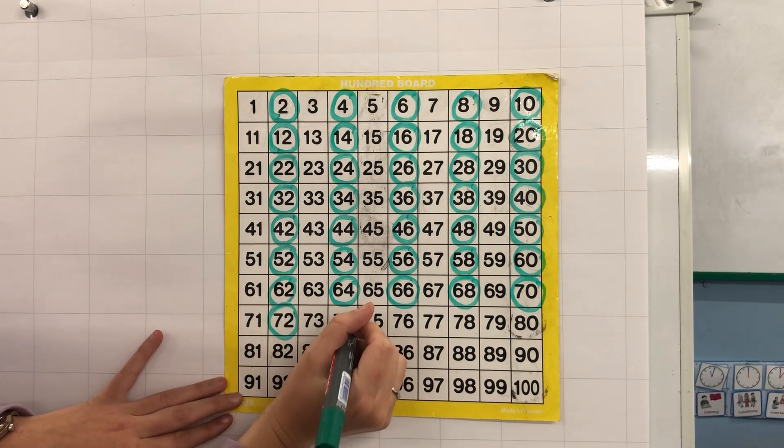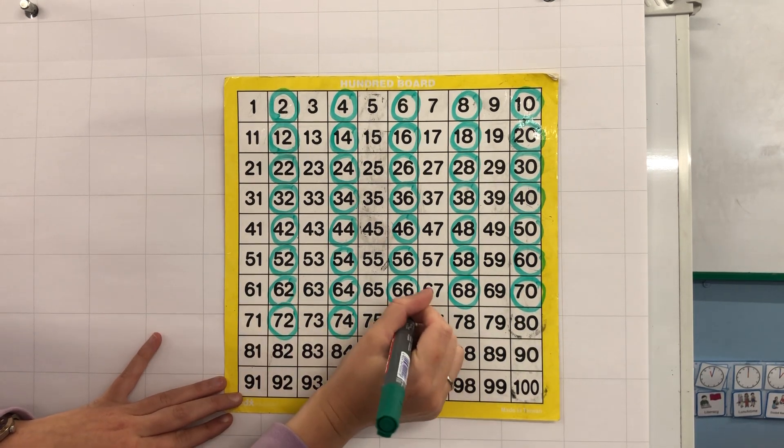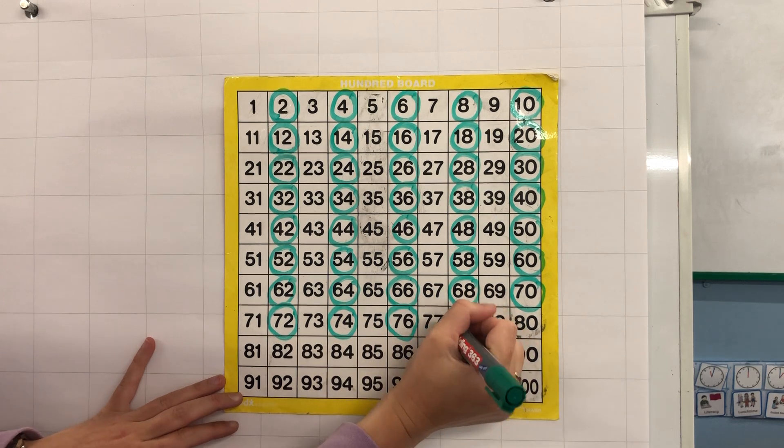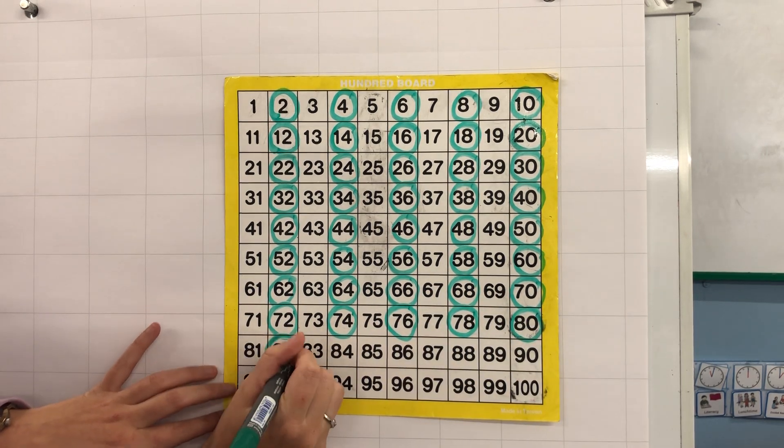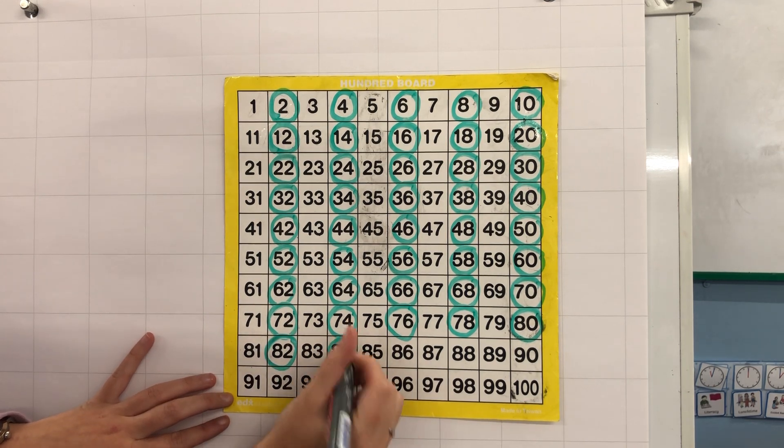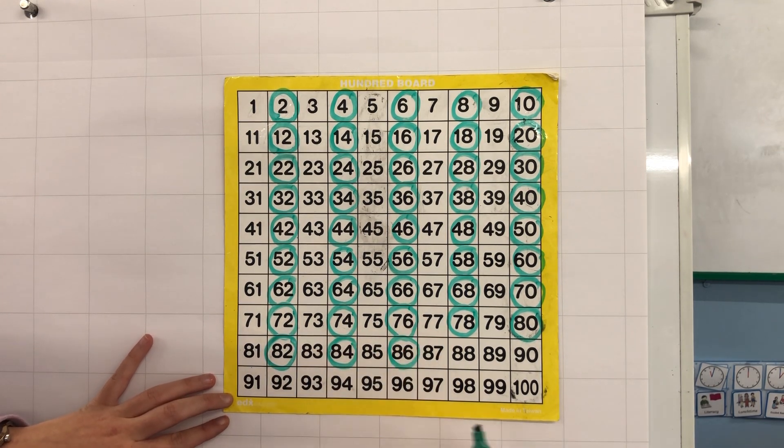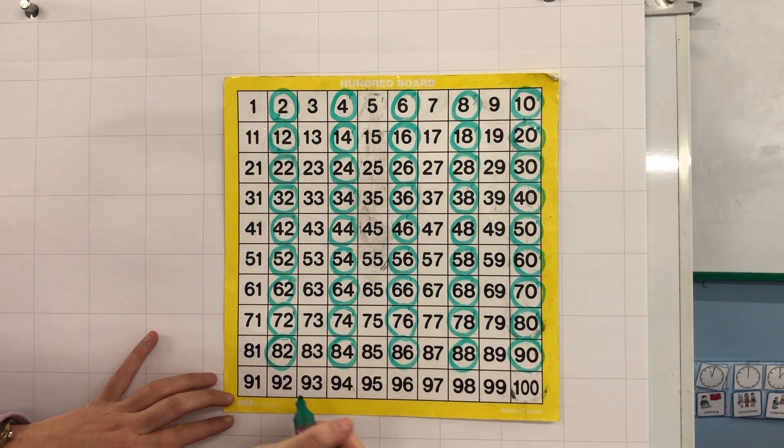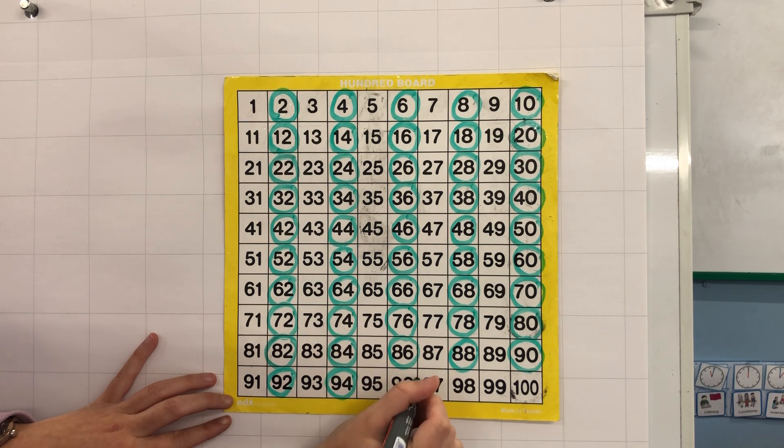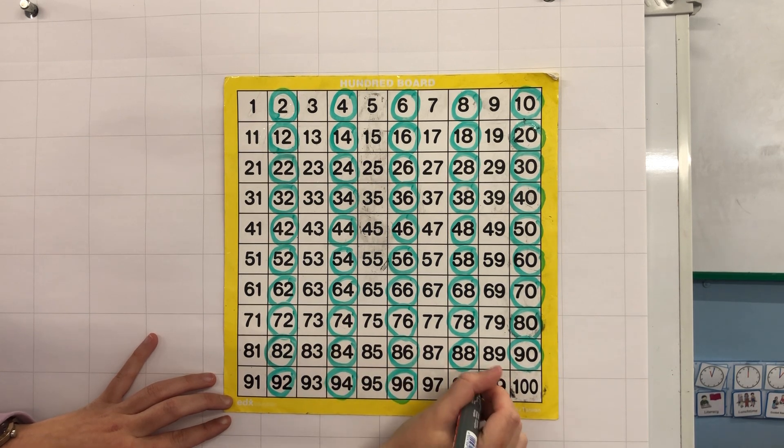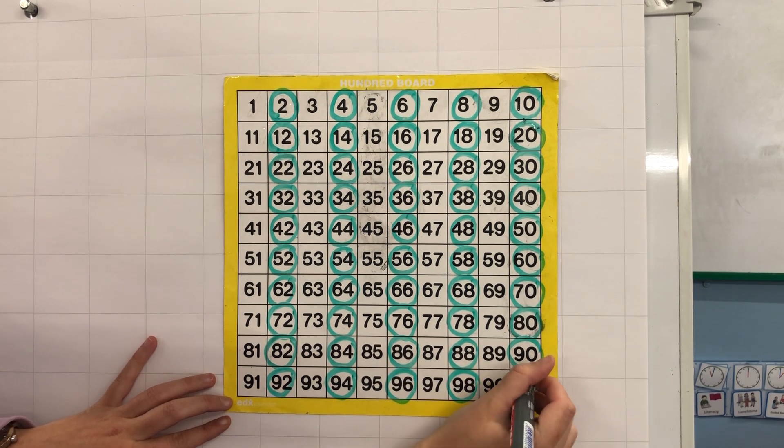72, 74, 76, 78, 80. 92, 94, 96, 98, 100.